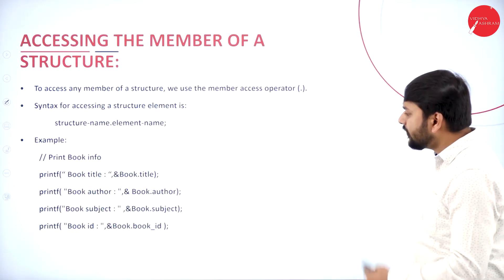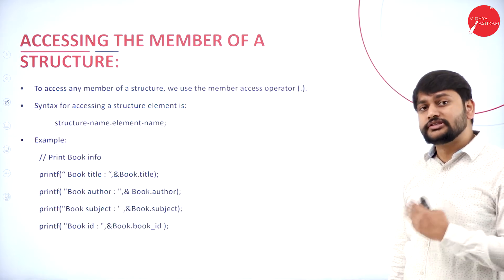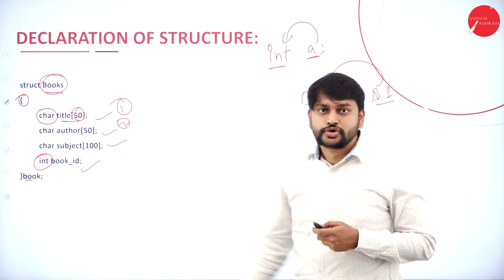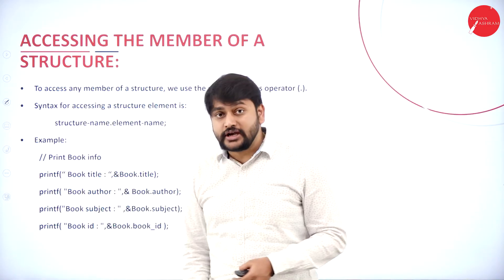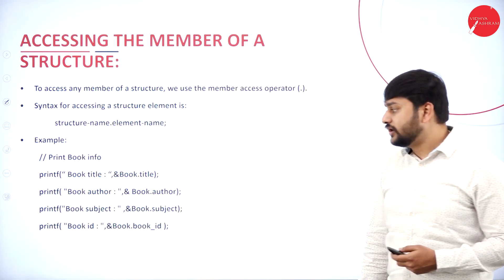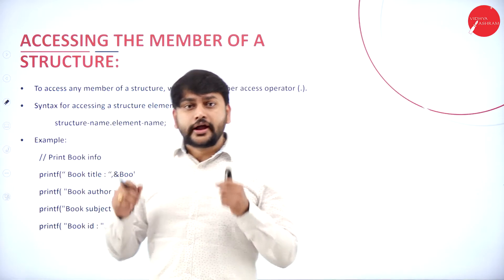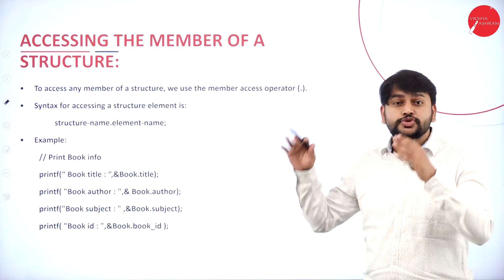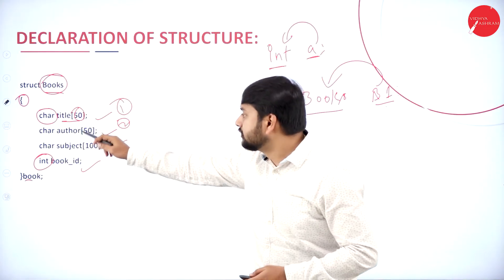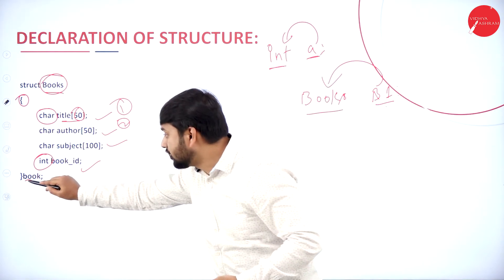Moving forward — how do I access the variables inside the structure? This is what we explore when accessing members of a structure. I call all these variables 'members'. Say I need to print the book name, which is the 'title'. To access any member of a structure, it is very important to remember: I use the dot operator.